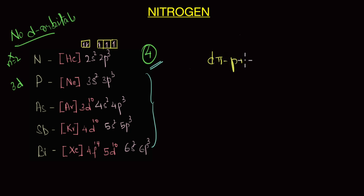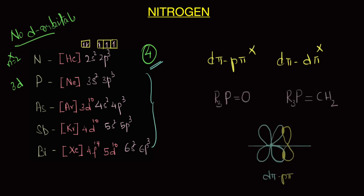Because of the absence of the d orbitals, nitrogen also cannot form d-pi-p-pi bonds or d-pi-d-pi bonds. This is obvious because it has no d orbitals at all. On the other hand, the heavier members actually can form these bonds. For example, phosphorus can use its empty d orbitals and overlap with the p orbitals of oxygen or carbon to form R3P double bond O or R3P double bond CH2. As you can see here, the d orbitals of phosphorus overlaps with the p orbitals of oxygen or carbon to form d-pi-p-pi bonding.